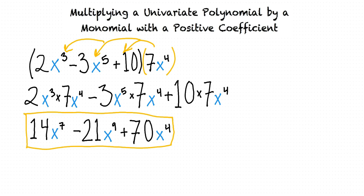This answer is correct. Nice job. One other thing to remember is that in some circumstances, we must arrange the terms so that the exponents are in ascending or descending order. Usually, descending order is preferred. That means we could consider the final answer to be negative 21x to the ninth plus 14x to the seventh plus 70x to the fourth. Still, your answer is also technically correct.